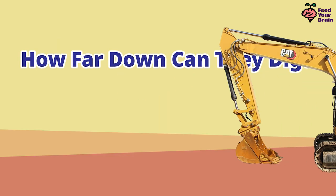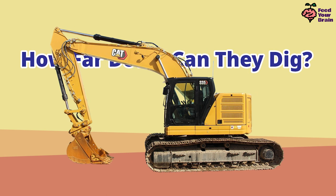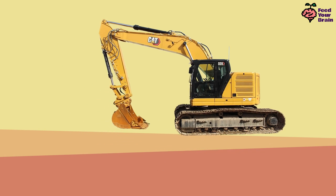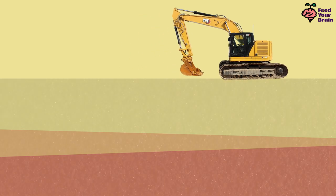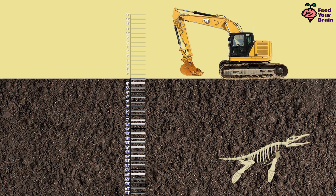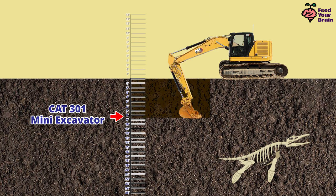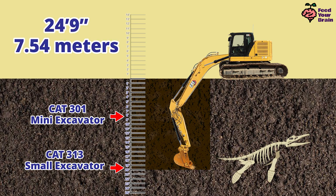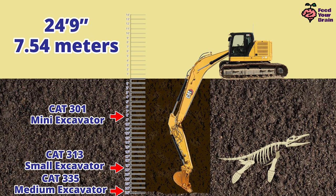How about this model number 335, the medium-sized Caterpillar excavator? We have to zoom out even more, because the depth will be even greater. The mini-excavator could dig down to just over 8 feet. The small 313F excavator digs down to almost 20 feet. And now this medium-sized 335 model can dig down to a whopping 24 feet 9 inches deep — about the height of four to six men standing on top of each other. Wow, that is super deep.